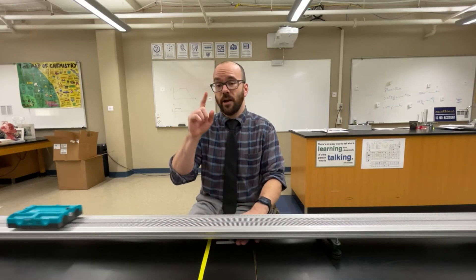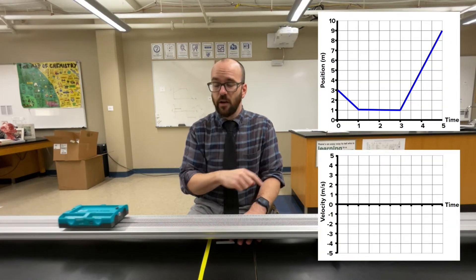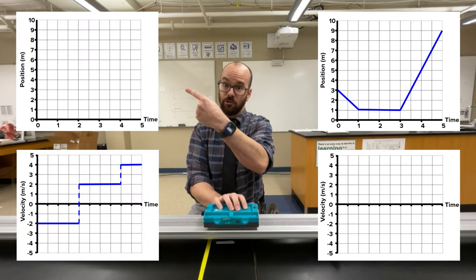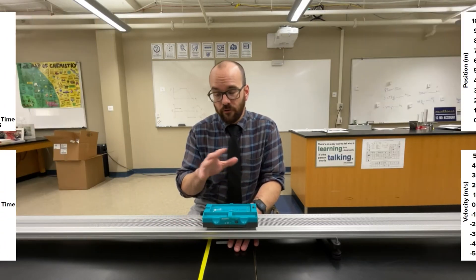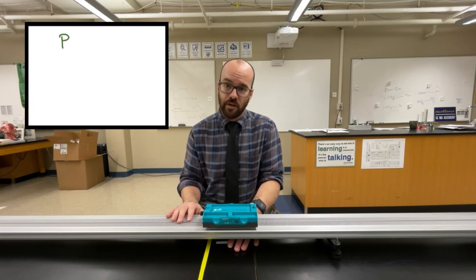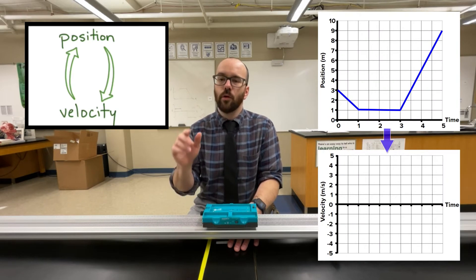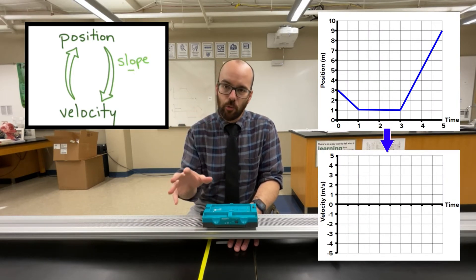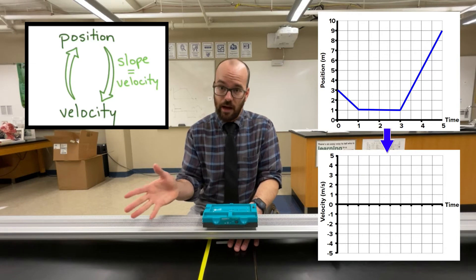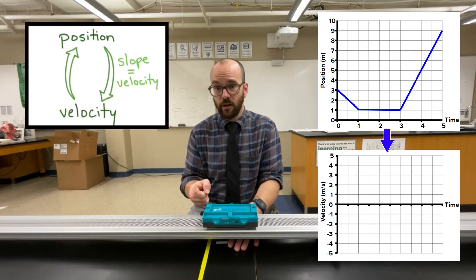In this video I'm going to show you how to convert from a position graph to a velocity graph, and also how to convert from a velocity graph back to a position graph. In order to convert between these graphs, we have to keep a couple principles in mind. Whenever we convert from position to velocity, we're going to find the slope of the position graph. The slope of the position time graph always tells us the object's velocity.